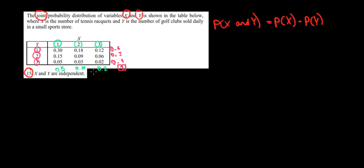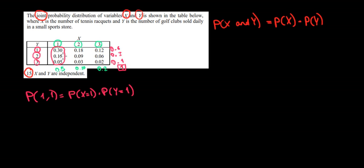We start to check the relationships, beginning with the first column. We're checking the probability that x equals 1 and y equals 1. The probability of (1,1) should equal the probability of x being 1 times the probability of y being 1. The probability that x is 1 is 0.5, times the probability that y equals 1 is 0.6. If we multiply the two, that's 0.30 — and that's exactly the cell value for x=1, y=1. So that relationship checks out.